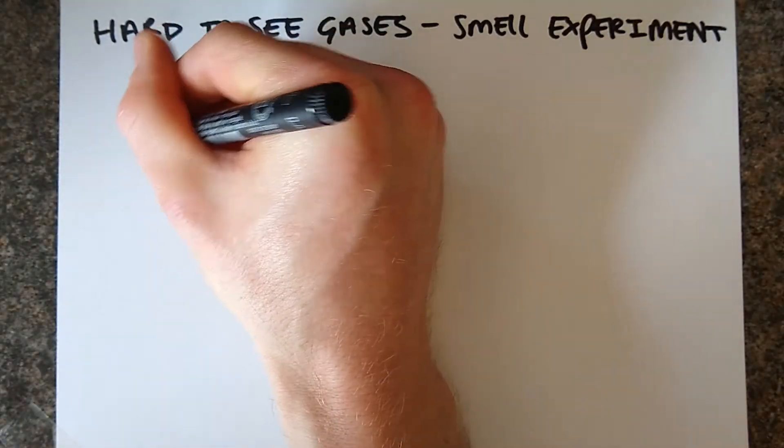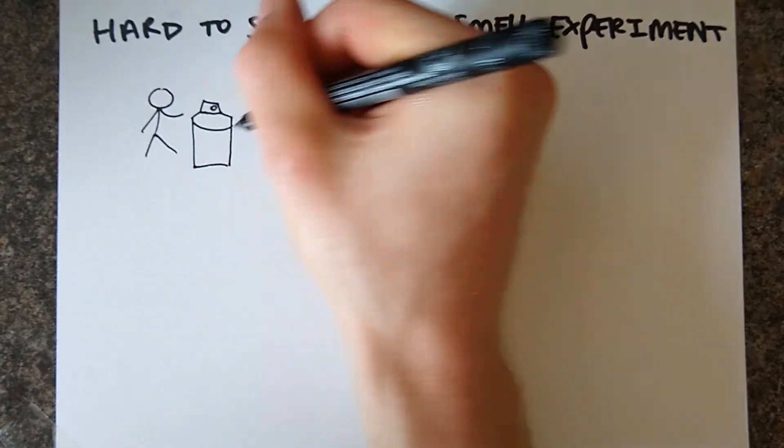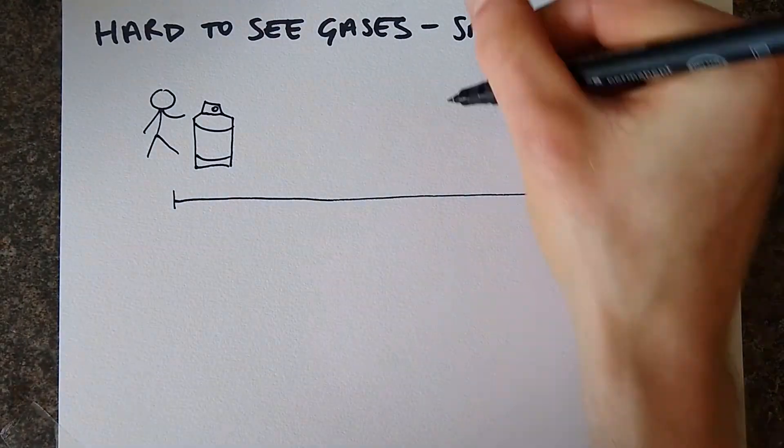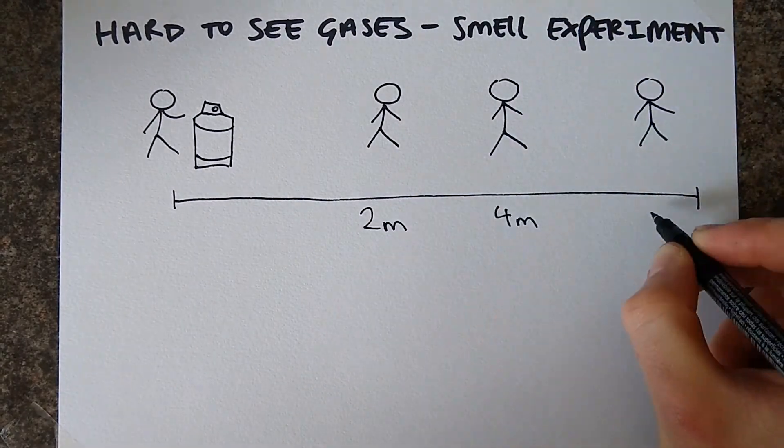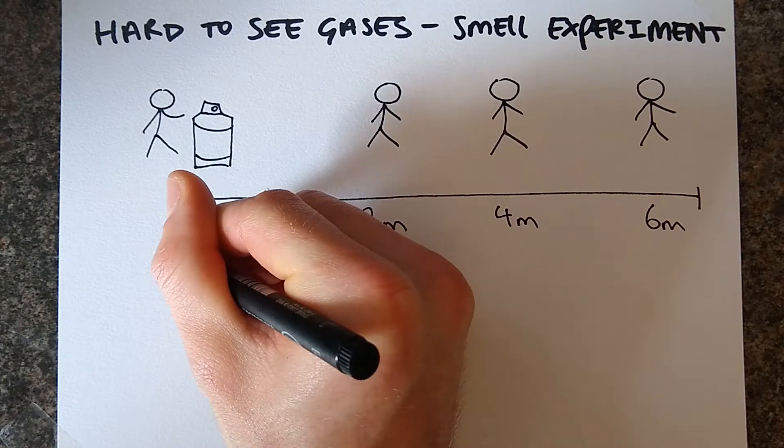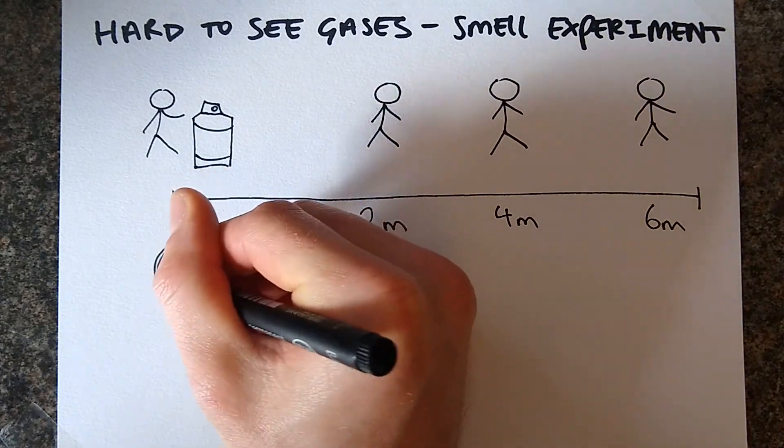Then at set distances away from this person, place other people. It's important to measure these distances so if you want to repeat the experiment you can change this variable more reliably. Using a stopwatch, time how long it takes for each person to be able to smell the deodorant or air freshener after the first person has sprayed it.